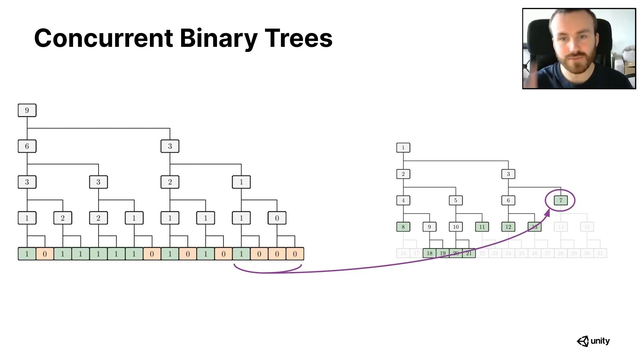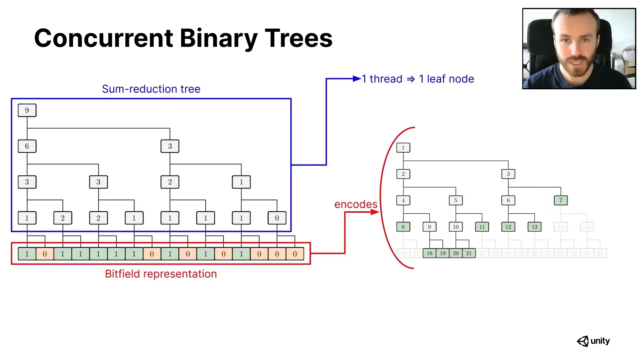This encoding of a binary tree in a flat bit field is explained in much more detail in Jonathan's paper and his HPG talk, which I recommend. And it's exploited by the other part of the concurrent binary tree, which is the sum reduction tree stored in all the other levels of the concurrent binary tree. It progressively sums the number of bits set to one, or leaf nodes, in the bit field, until the root node, which gives us the total amount of leaf nodes in the binary tree encoded by the bit field.